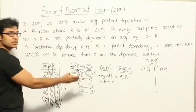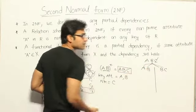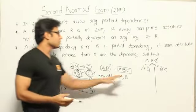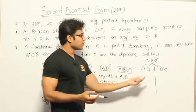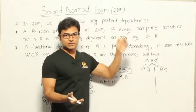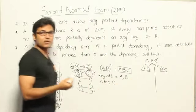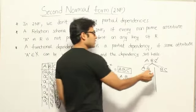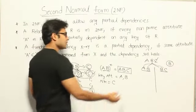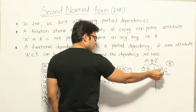Even though you decompose now, later you might need to merge the tables — for example, if a query asks for the relationship between A and C. When merging, you want to get the original table back. Without a common attribute to merge on, you might get spurious tuples — that is called lossy. As long as you maintain a common attribute and that attribute is a primary key for one of the tables, the decomposition is lossless. Here the intersection is B, and B determines C, so B is a key for the BC table. Therefore the decomposition is lossless.